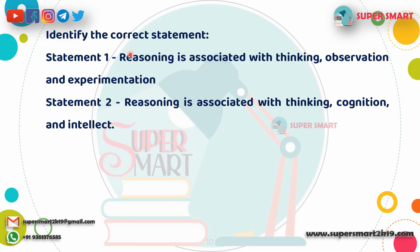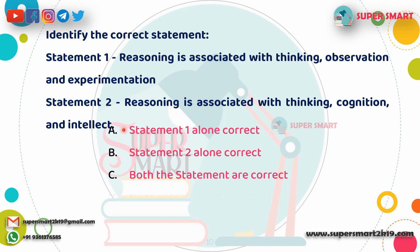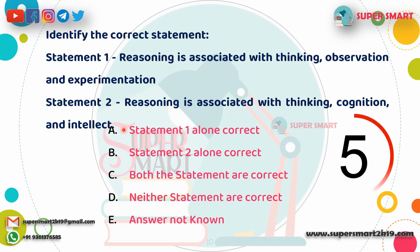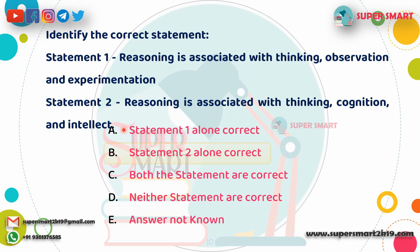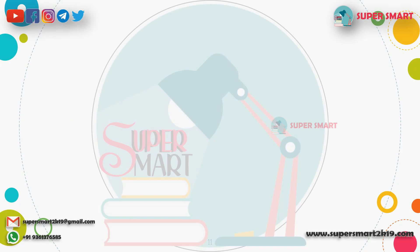Next, identify which of two statements is correct. Statement 1: Reasoning is associated with thinking, observation, and experimentation. Statement 2: Reasoning is associated with thinking, cognition, and intellect. Answer: Statement 2 is correct.